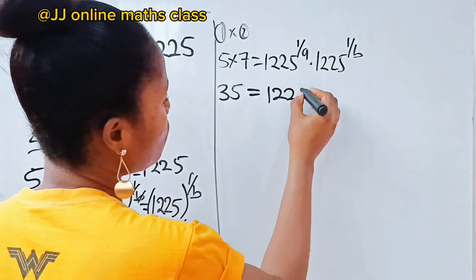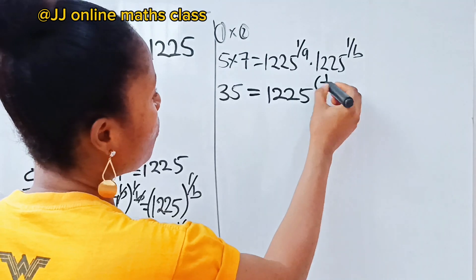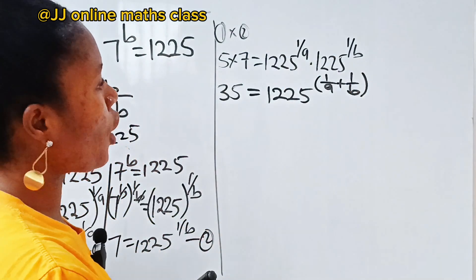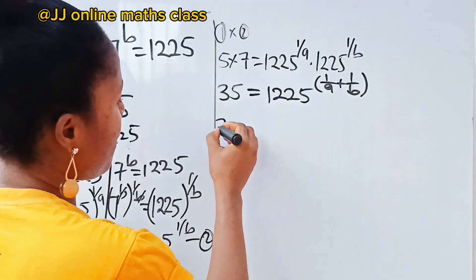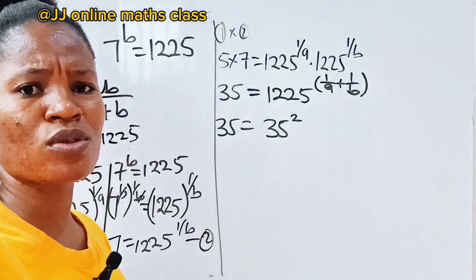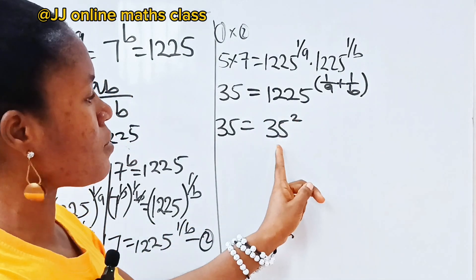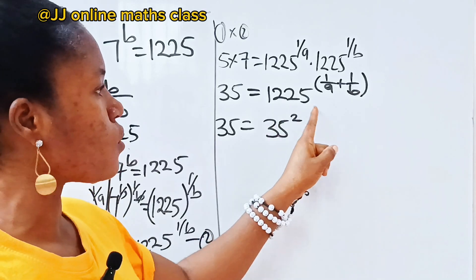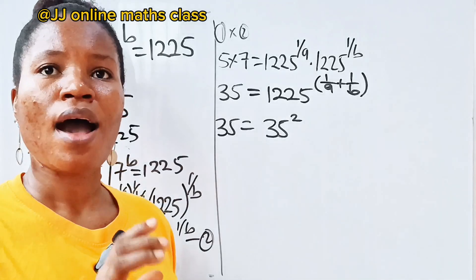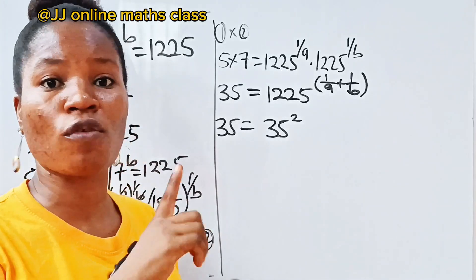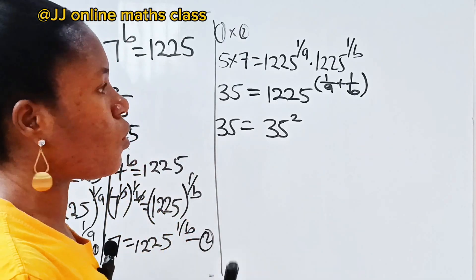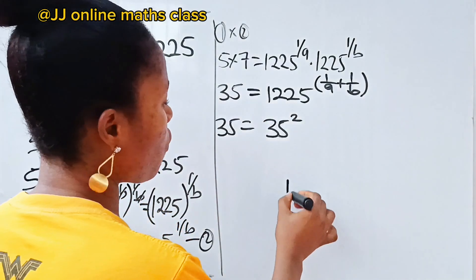So we have 1225 as the common base, and we add the powers: one over a plus one over b. Now, 35 is equal to 1225 raised to the power of one over a plus one over b. Notice that 1225 is the same thing as 35 squared. How did I know? The square root of 1225 is 35. In this channel I have a masterclass on how to find the square root of any number in seconds without a calculator.